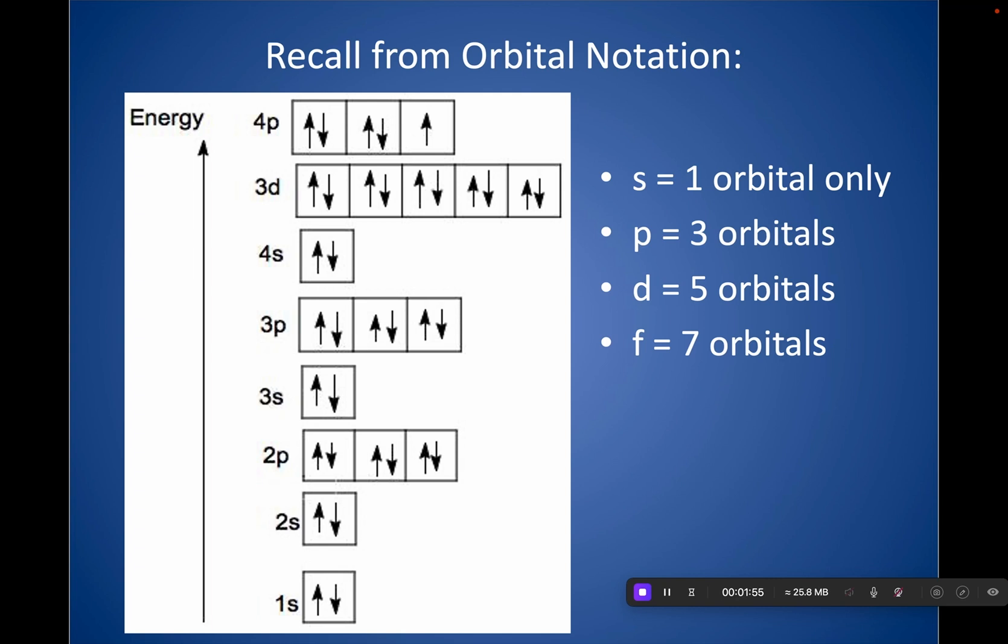If you remember, an orbital is a likely location of finding an electron. And we give them these different letters because each of these different letters actually has a different shape to them as well.